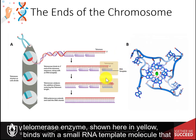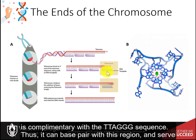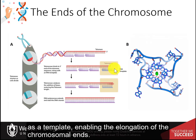The telomerase enzyme, shown here in yellow, binds with a small RNA template molecule that is complementary with the TTAGGG sequence. Thus, it can base pair with this region and serve as a template, enabling the elongation of the chromosomal ends.